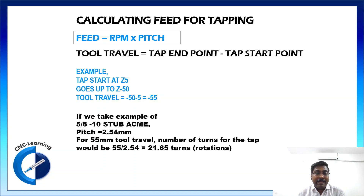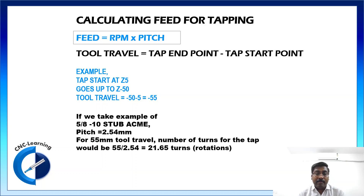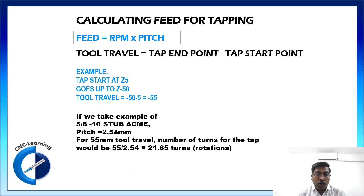Taking the example of the 5/8-10 STUB ACME thread, the pitch we already calculated is 2.54 mm. For 55 mm of tool travel, the number of turns is 55 ÷ 2.54 = 21.65. That means the tap has to rotate 21.65 turns.